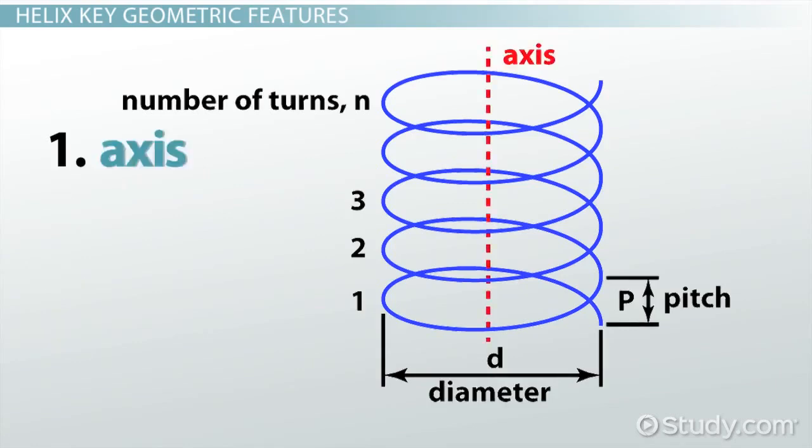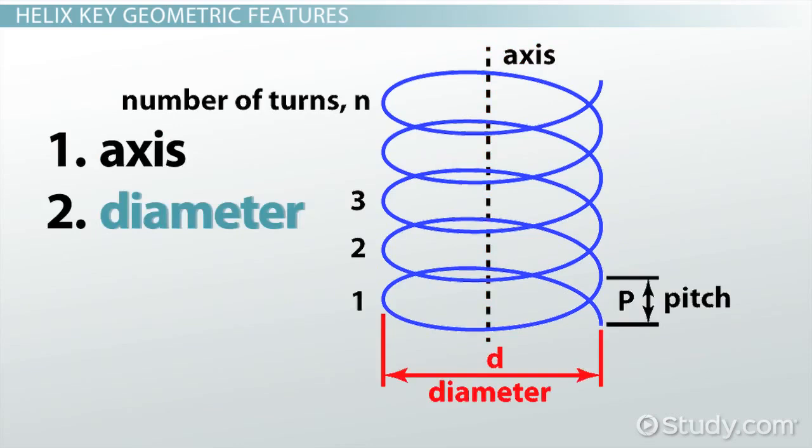1. Axis. This is the line of symmetry about which the helix is wound. 2. Diameter. This is the largest lateral dimension of the helix. This is equal to the diameter of the circle formed by the projection of the helix on a surface perpendicular to it.